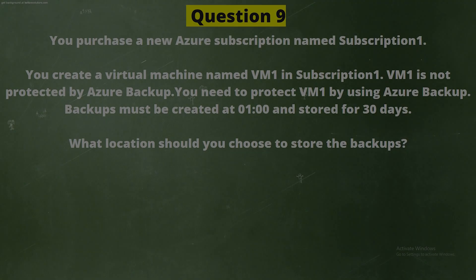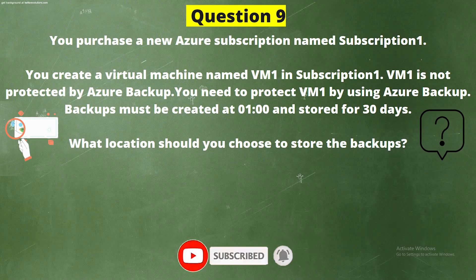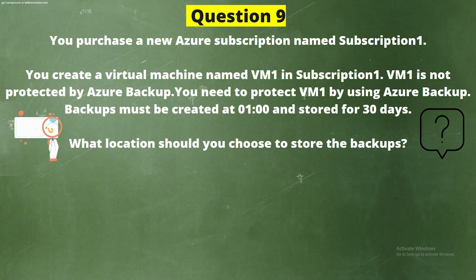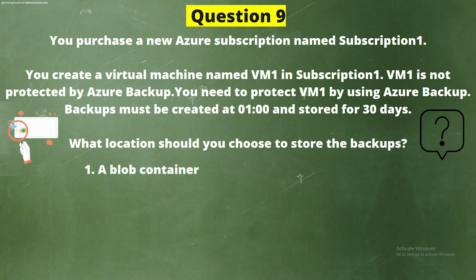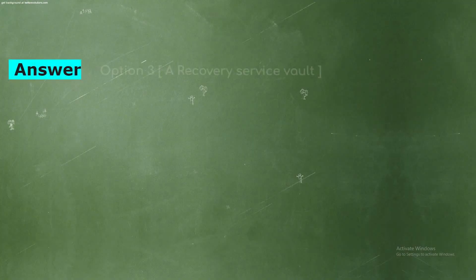Next question: You purchase a new Azure subscription named Subscription1. You create a virtual machine named VM1 in Subscription1. VM1 is not protected by Azure Backup. You need to protect VM1 using Azure Backup. Backups must be created at 1 AM and stored for 30 days. What location should you choose to store the backups? Options: option 1, a blob container; option 2, a file share; option 3, a Recovery Services Vault; option 4, a storage account. The correct answer is option 3, a Recovery Services Vault.